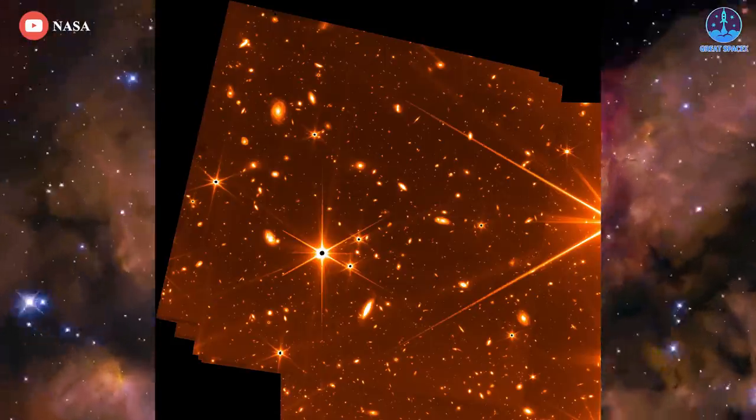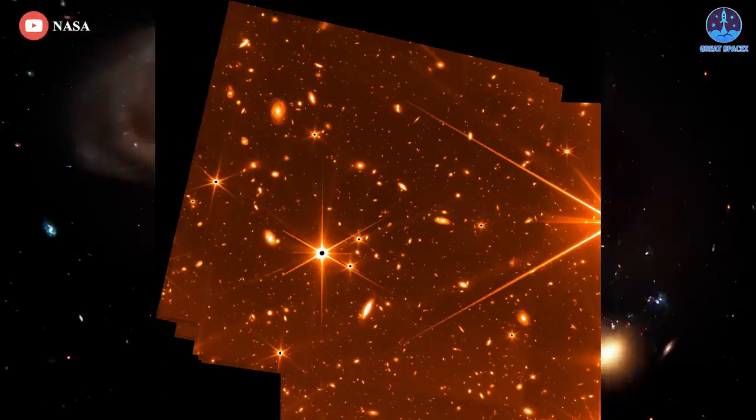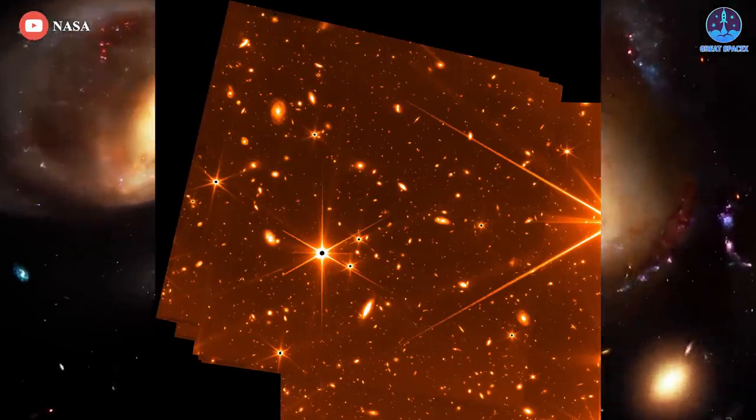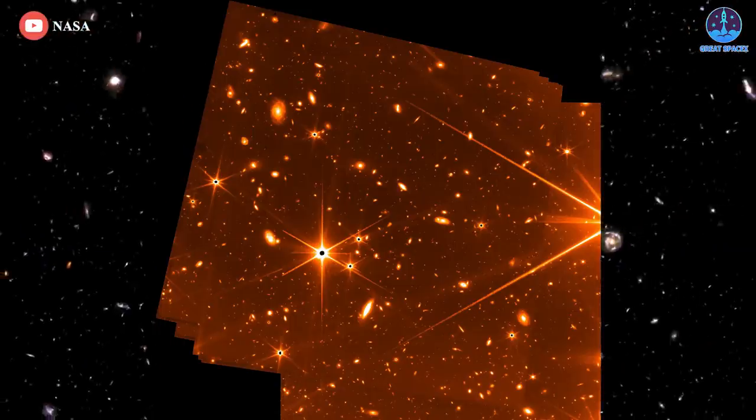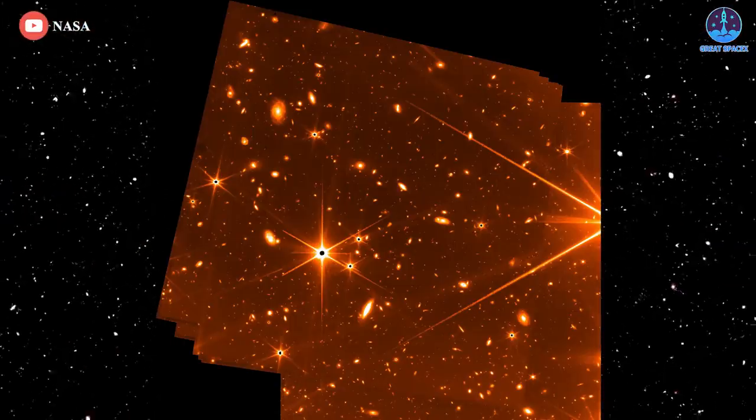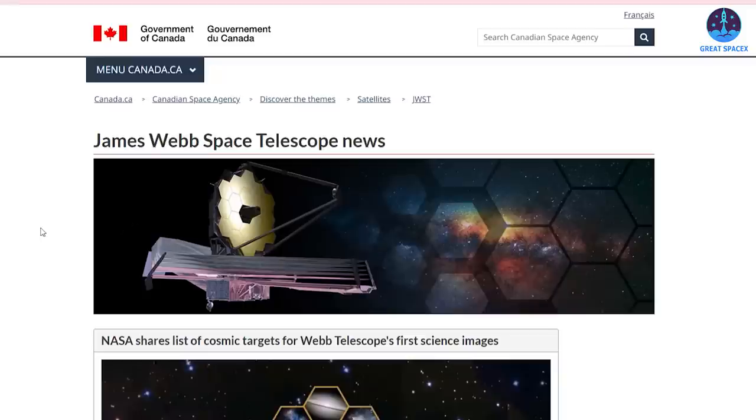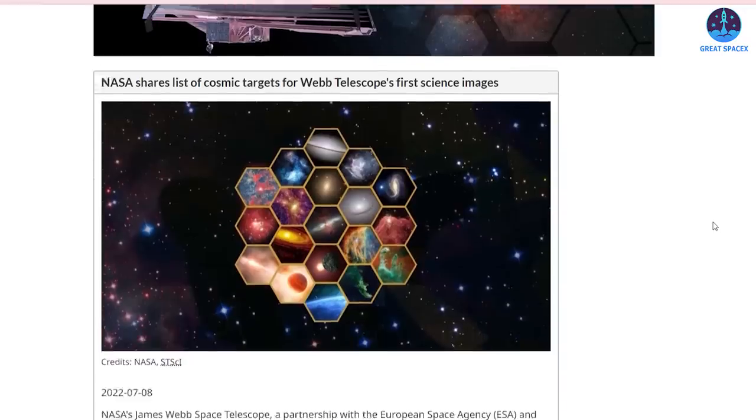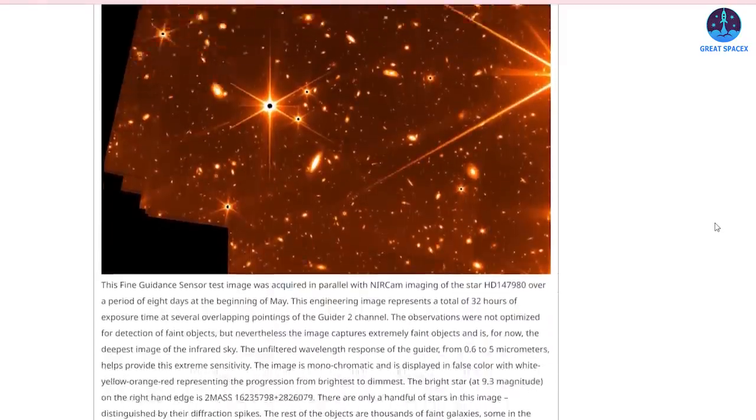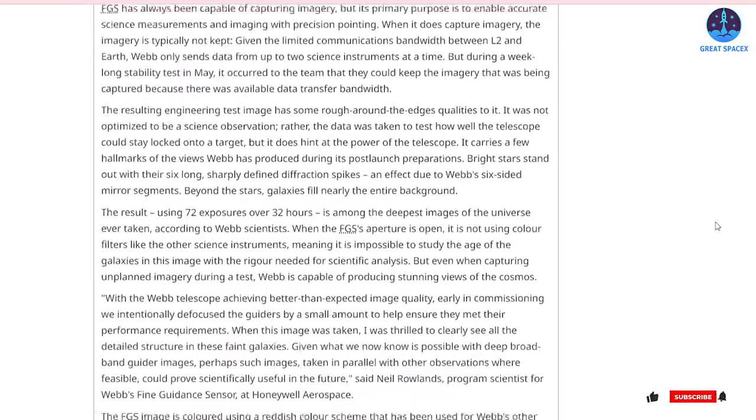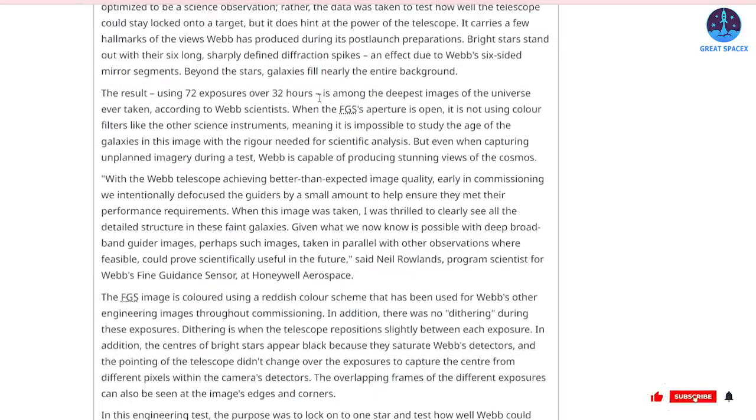James Webb's new engineering image has just smashed an astronomical record without trying, as it reveals hundreds of distant galaxies in the deepest ever glimpse into the infrared universe. The image released by NASA on Wednesday was captured by Webb's fine-guided sensor, or FGS, over an eight-day period in May and encompasses 72 snapshots taken during 32 hours of exposure time.